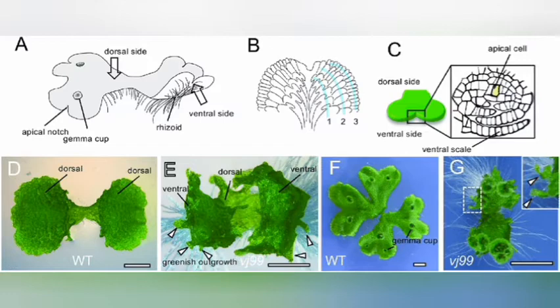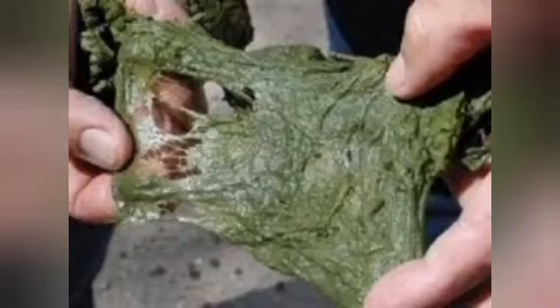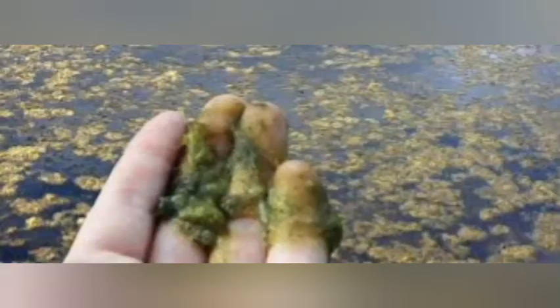The third is called filamentous Algae. Filamentous Algae are multicellular Algae. They have a cylindrical shape and also comprise cells arranged end to end — these are called filamentous Algae. One example of filamentous Algae is Spirogyra.